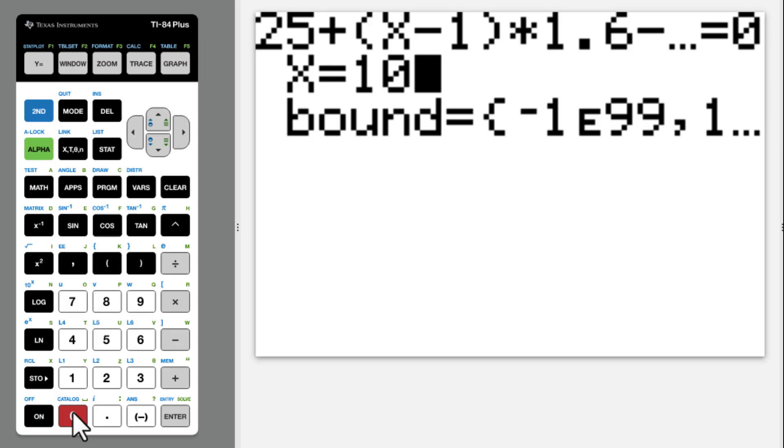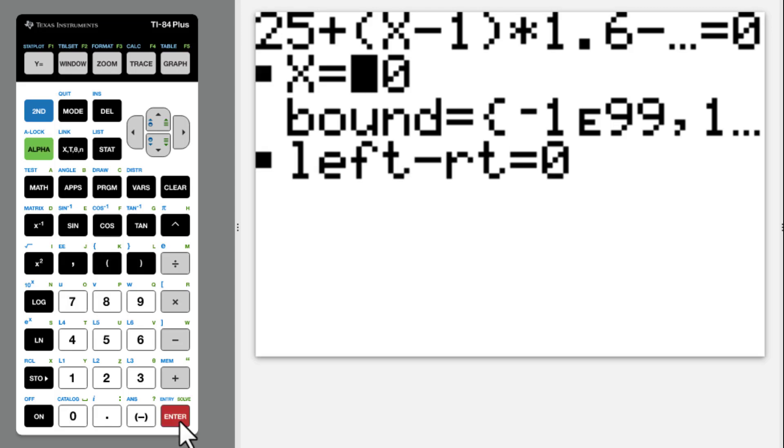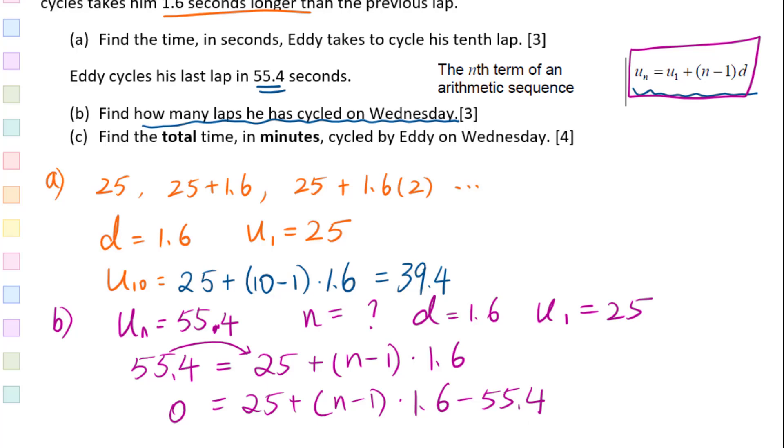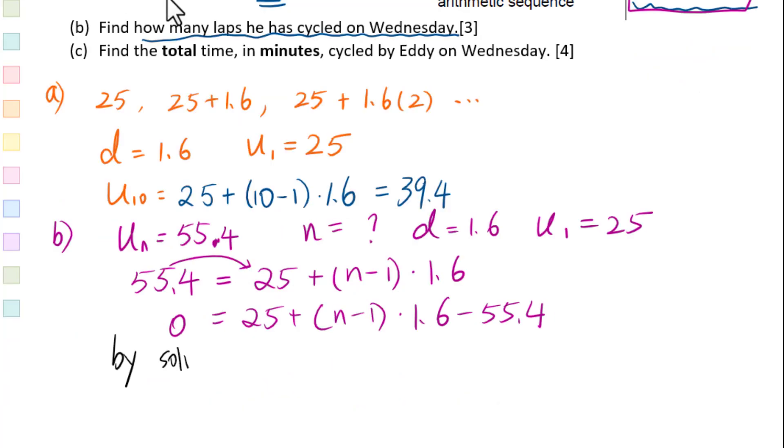Estimate the value. I put 10.5, then alpha, enter. Answer is 20.5. By solver, n equals 20.5.